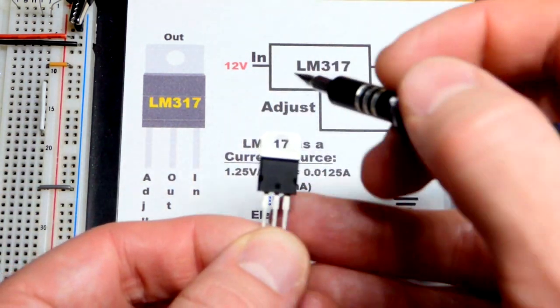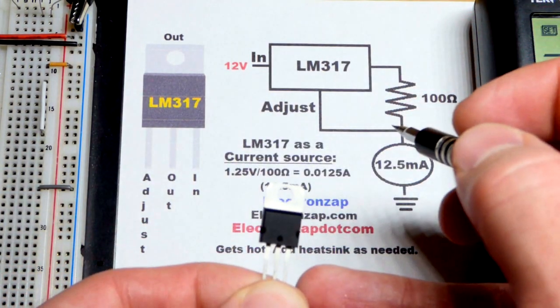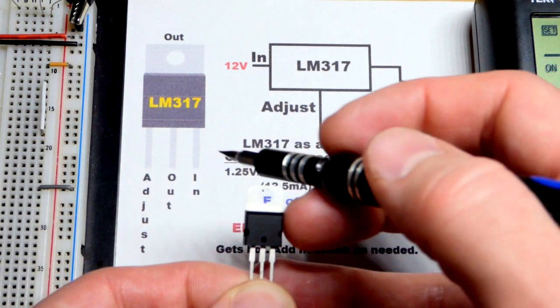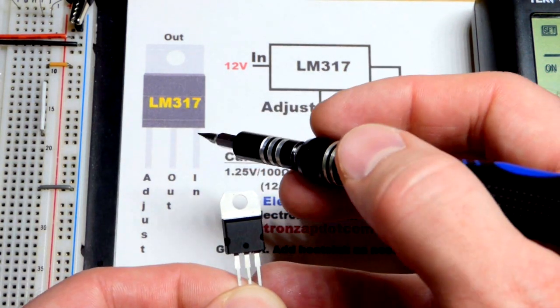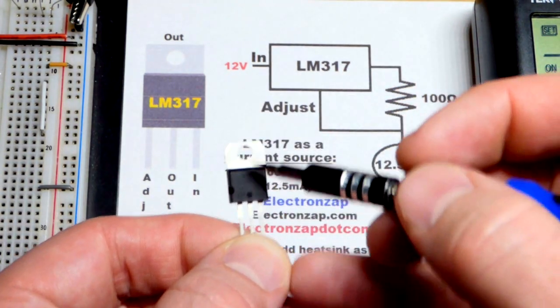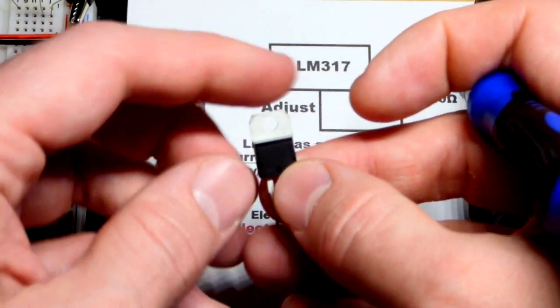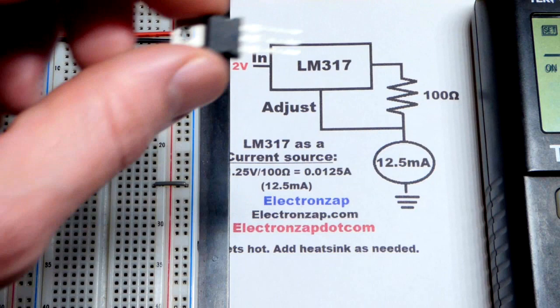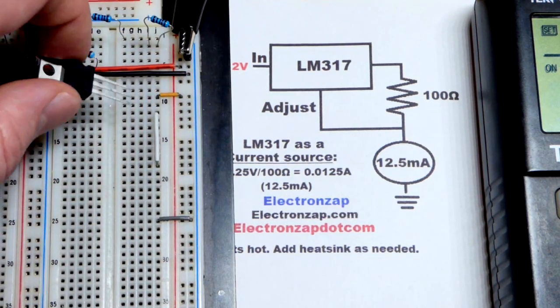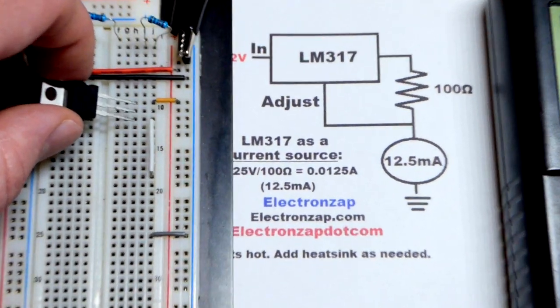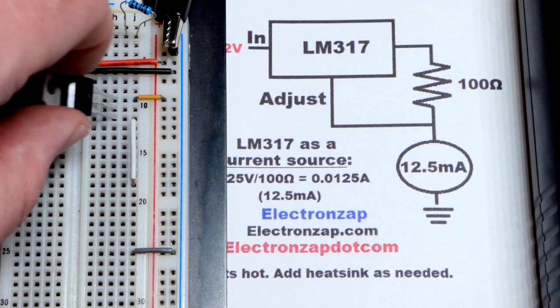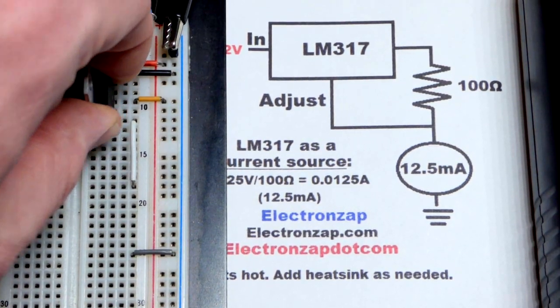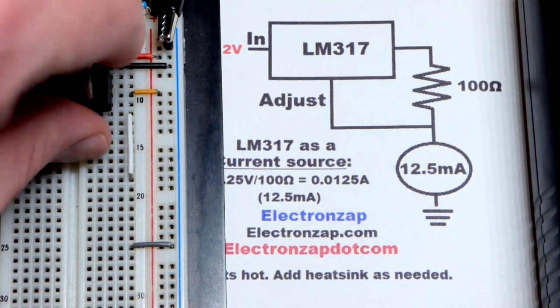So left pin is the adjust pin that you see right there. And that's where we're going to have that white jumper. So that's going to be on one side. The other side is going to be the in pin. That's the right pin. And then output is in the middle. So we're going to turn it this way. And I have the orange jumper there. That is the in pin.